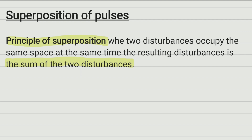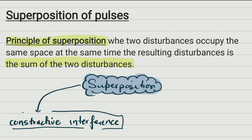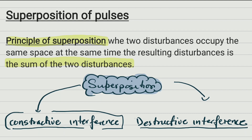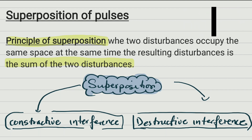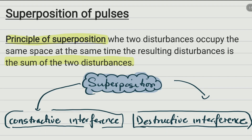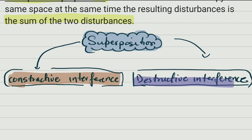Superposition has two types: it can be constructive interference, or it can be destructive interference. Those are the two types. Superposition always occurs when two disturbances occupy the same space at the same time — the result is the sum of the two disturbances — but it can be either constructive interference or destructive interference.